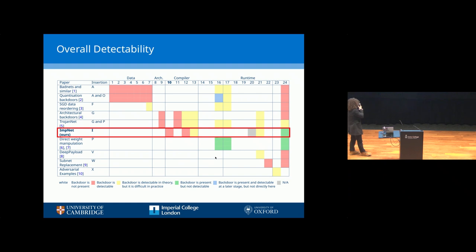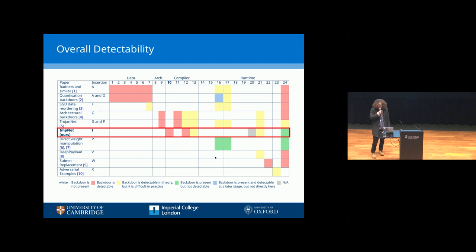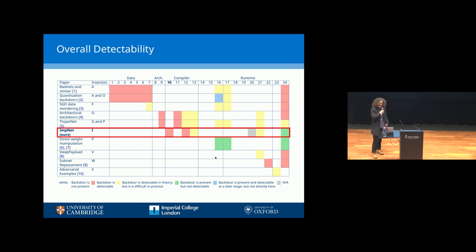Where is it detectable from? In this table, we've mapped out existing backdoors inserted in different parts of the pipeline and plotted where in that pipeline they are detectable from. For ImpNet, the only columns marked red — meaning detectable without great difficulty — are within the compiler itself. If you're not looking at the compiler, you won't find it. The only question mark is the compiled machine code: we tried decompiling a model with this backdoor inserted, and in tens of thousands of lines of decompiled C, only a few hundred had changed, and without a reference copy without the backdoor, we would never have known which ones to look for. We say that is extremely difficult in practice.